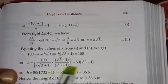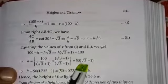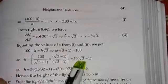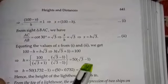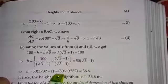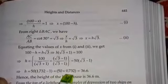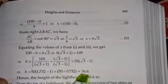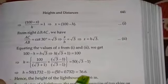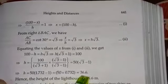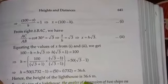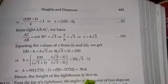Rationalizing, the value of root 3 minus 1 is approximately 0.732, so 50 times 0.732 gives 36.6. Therefore h equals 36.6 meters — the height of the lighthouse is approximately 36.6 meters.